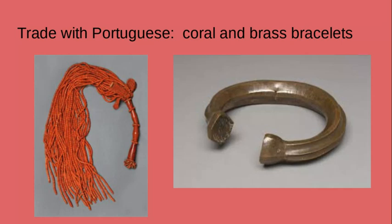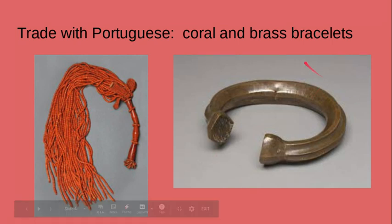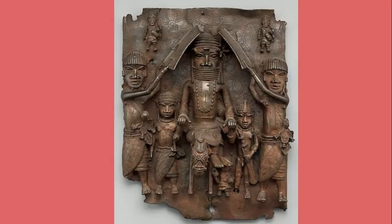Part of the reason this piece looks the way it does is because of the Portuguese. The Portuguese had come into Benin, this area in Africa, probably around the 1400s — the 15th century — and they had a mutual trade relationship. The Portuguese would offer coral and brass bracelets, and the Benins would trade spices like pepper, stone beads, and cloth. That's where these brass plaques come from — they would melt down the Portuguese brass bracelets and make all of these plaques.